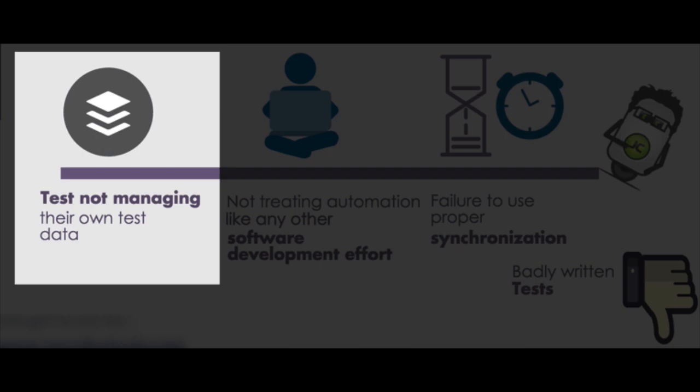Number seven, tests not managing their own test data. Expecting your tests to have data within any environment without setting up data on your own will cause your tests to fail. You need some sort of test data management in place to handle what test data your tests will use. A good practice is to use a setup or teardown method. In your setup or before story method, you're creating the data on the fly, and at the end, you're doing a rollback or cleaning up the data.